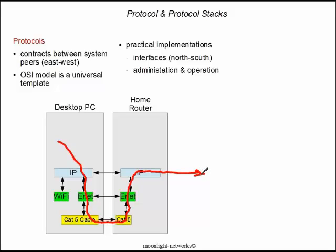Once again, there is no physical connection between the IP layers and their peers. All the information has to pass over a physical connection — in this case, CAT5 cable.